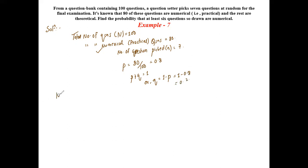The probability that at least six questions are numerical means we use greater than or equal sign. Now we have X greater than or equal to 6.